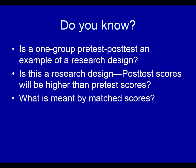What is meant by matched scores? It's about when you have a pre-test score and a post-test score from a group of individuals and you know how to match each one — for example, you know what the pre-test score and post-test score is from John Smith and from Mary Jones. You can match each person's pre-test score with that person's post-test score. There are other examples of matched scores, but that's the most likely one you'll face in evaluative research.